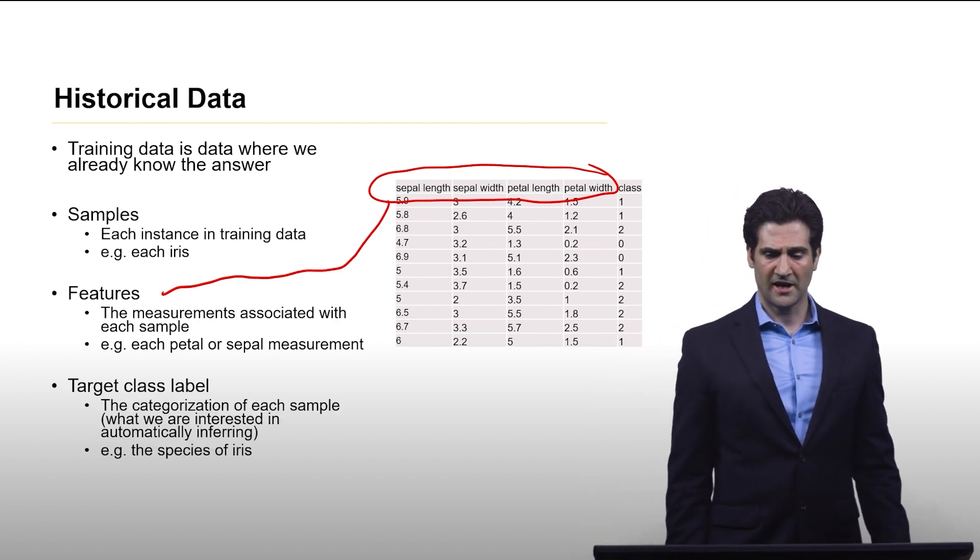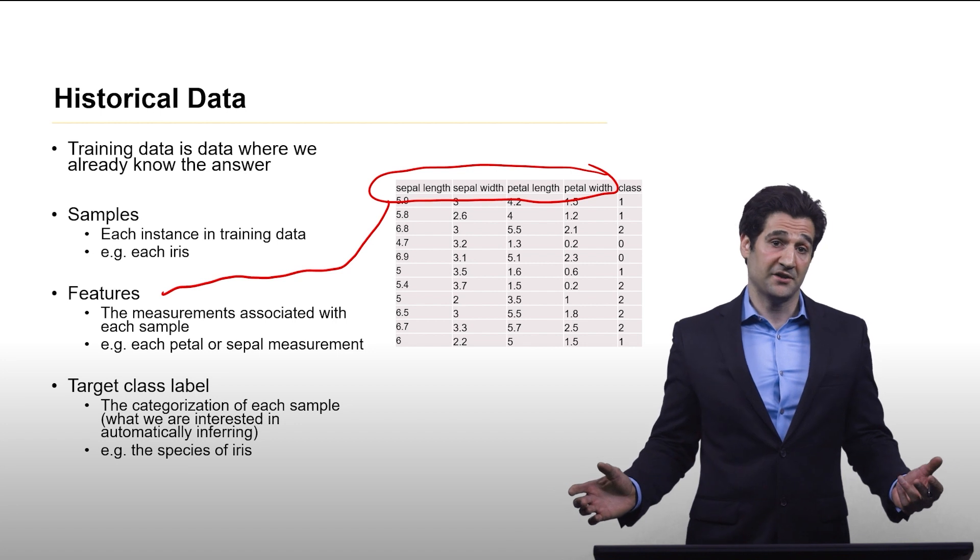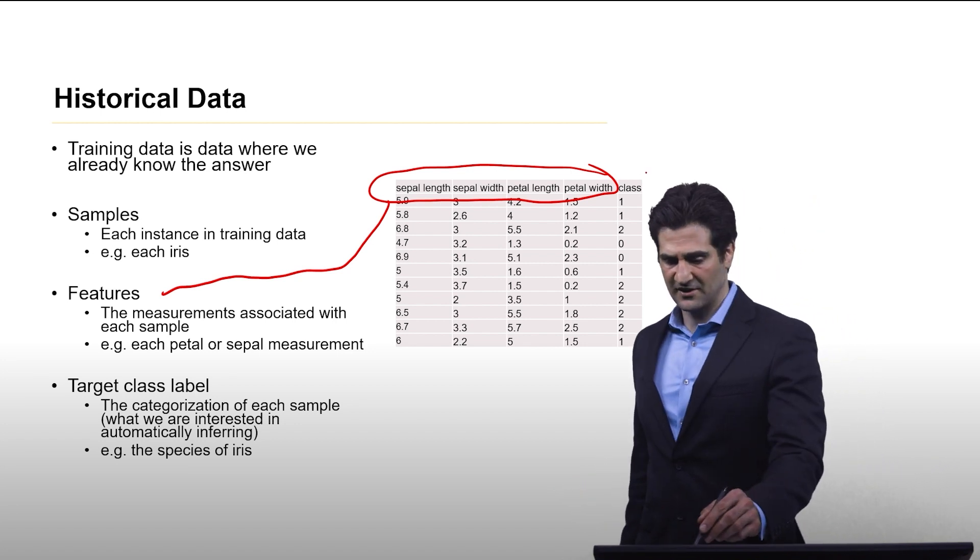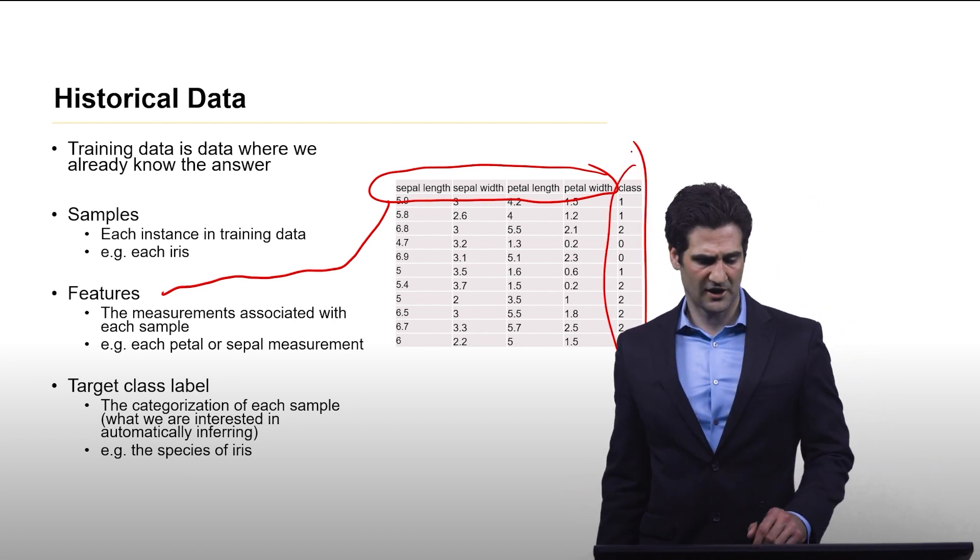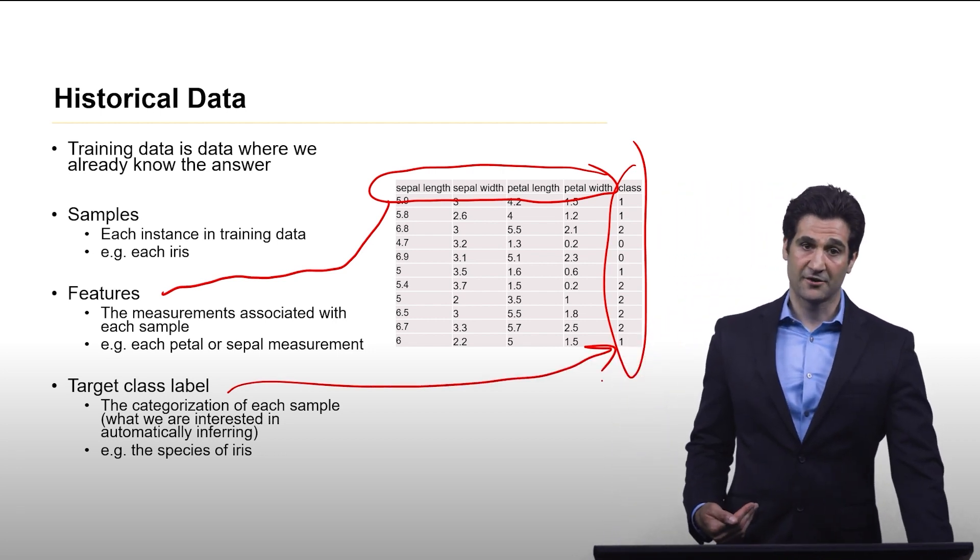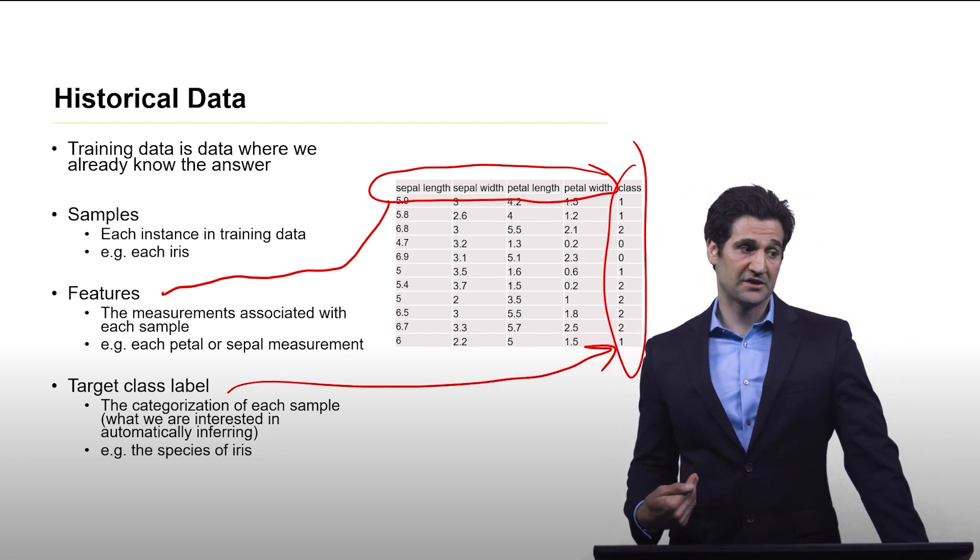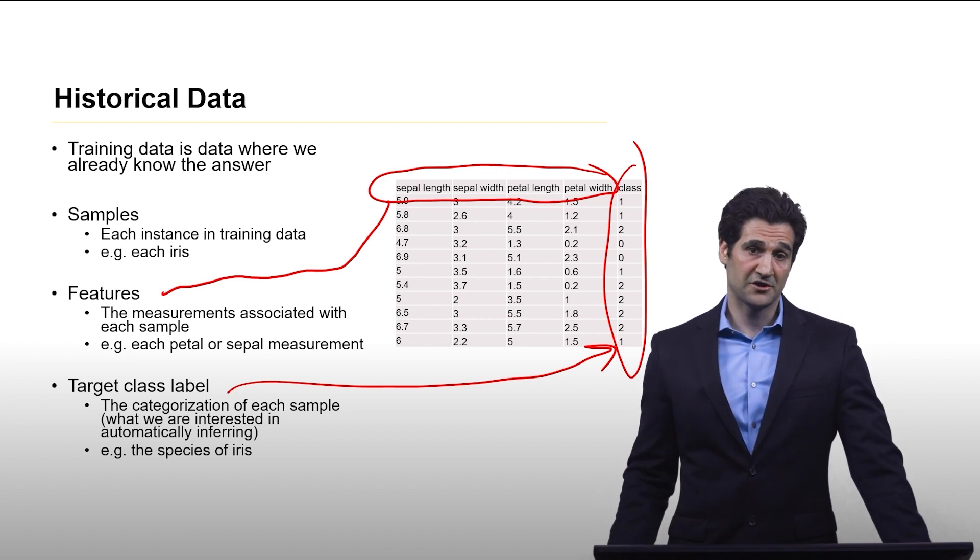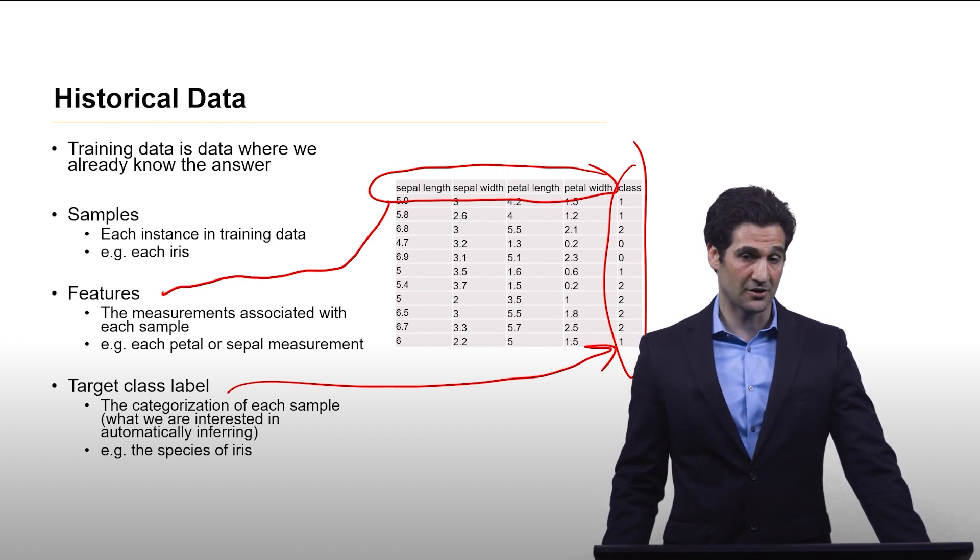And finally, the target class label. This is what the right answer is. That is this last column we have simply labeled as class. This is the categorization of each sample, and this is ultimately what we want the machine learning model to be able to infer on its own.